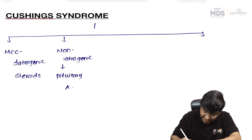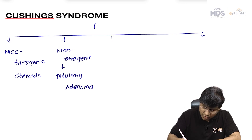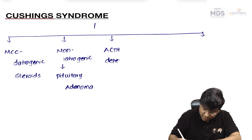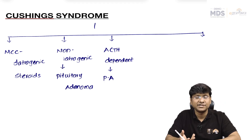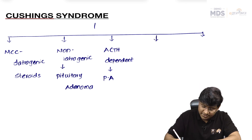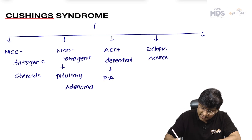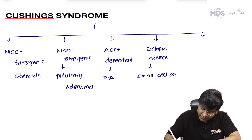What is the most common cause of the ACTH-dependent type of Cushing's? It is again the pituitary adenoma. Steroid production can also come from ectopic sources. The most common ectopic source for Cushing's is the small cell carcinoma of the lung, also called oat cell carcinoma.